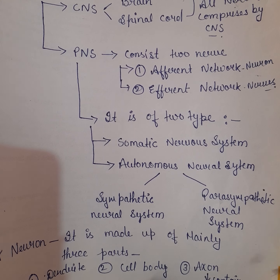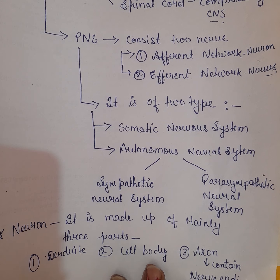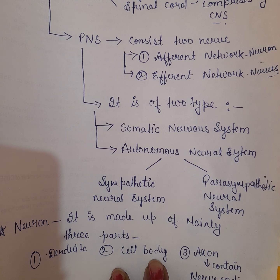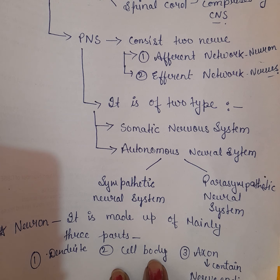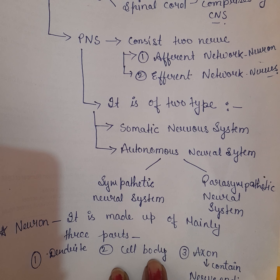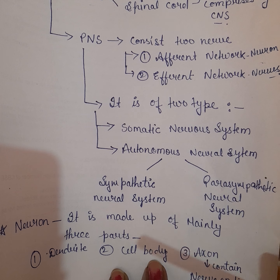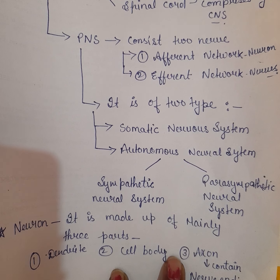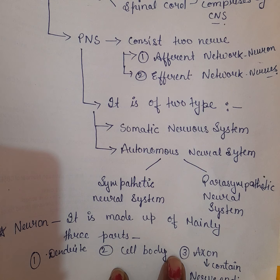Yeh cheezein bahut simple lagti hain lekin jab questions aate hain toh hum confused ho jaate hain. For example, question aa sakta hai: 'You are in a fear condition — which nervous system will work?' Options mein somatic, autonomic, ya central nervous system aa sakte hain. Aapko pata hona chahiye ki autonomic nervous system kaam karta hai jab hum kisi threatening condition mein hon. Parasympathetic nervous system tab kaam karta hai jab hum normal condition mein hote hain.